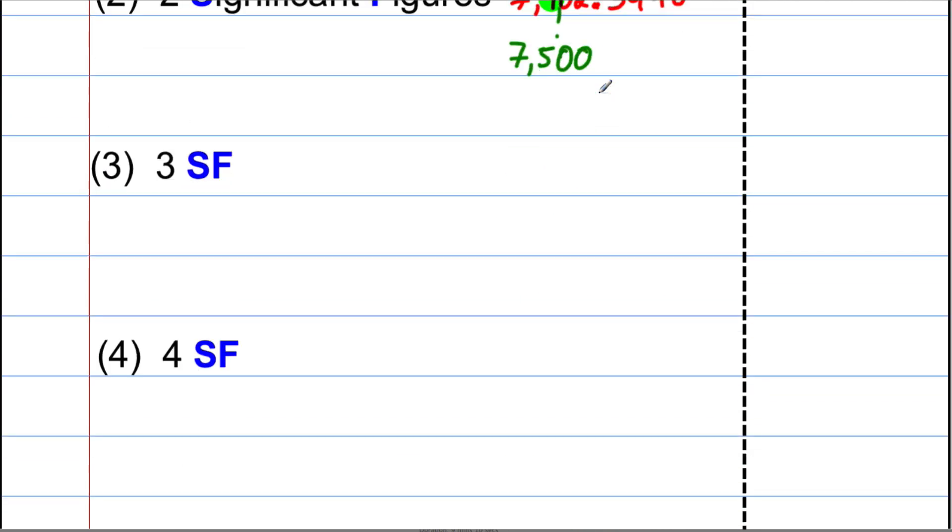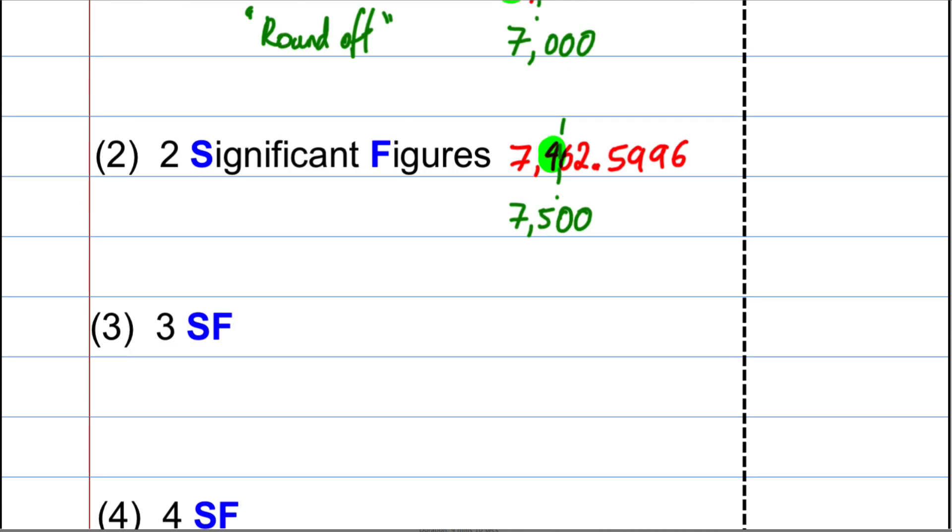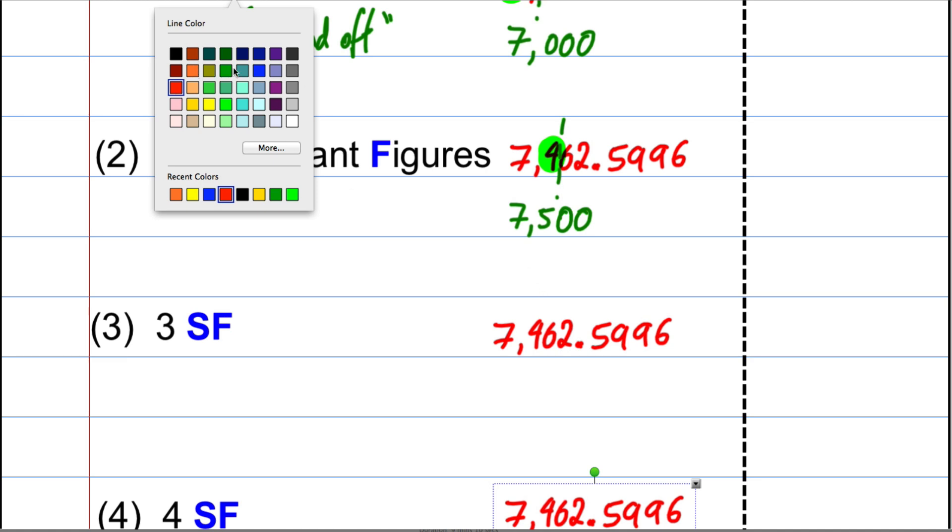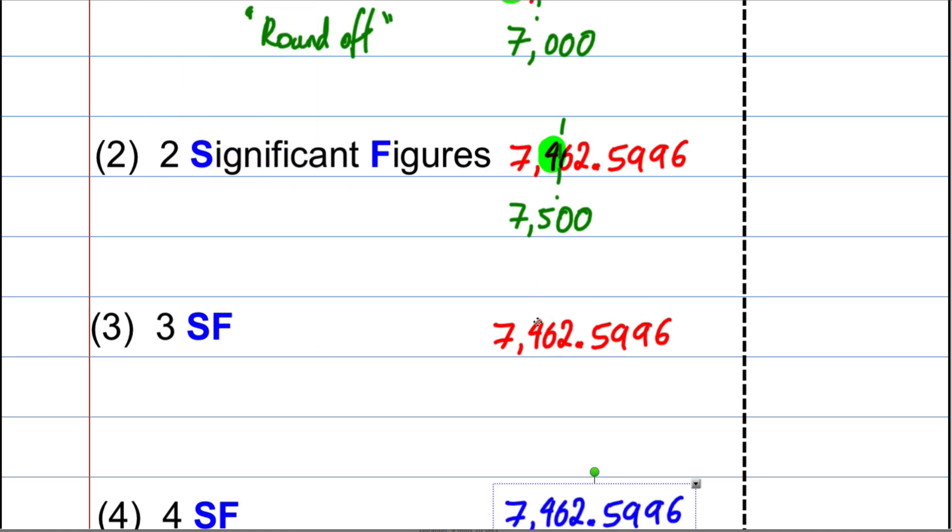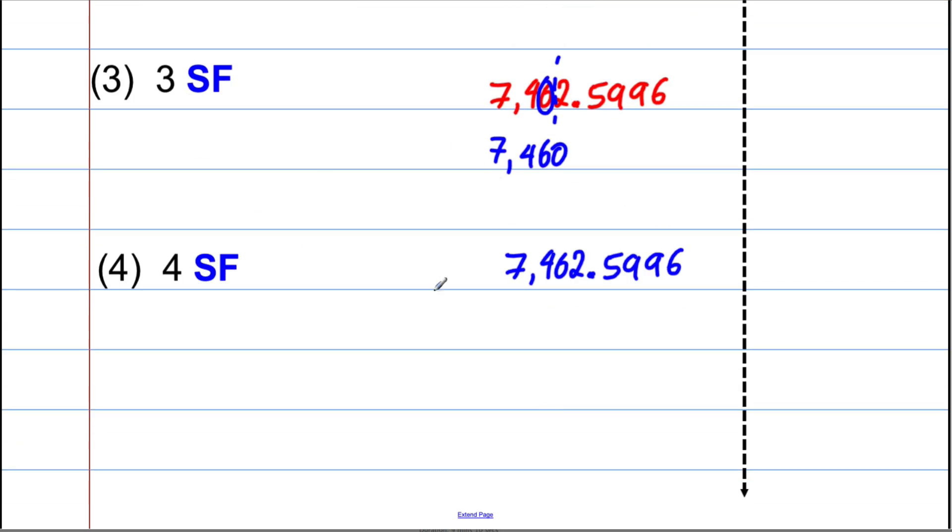Let's keep going with this then. Let's do three significant figures and four significant figures. So three significant figures. Let's just highlight it this time. The third significant figure is going to be the 6 here. And because we have a 2, we round off. So it's 7, 4, 6, 0 is our answer. And the last one to four significant figures. The 2 is our fourth significant figure. Because we have a 5 here, we round up. That's 7, 4, 6, 3.